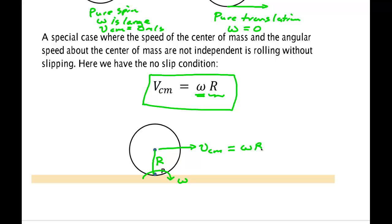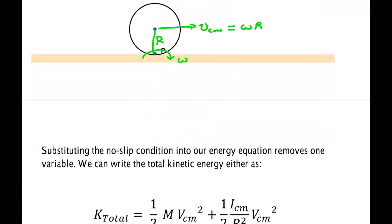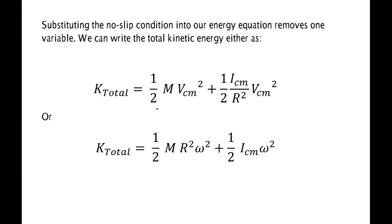Now, what that means is that you can go in and either eliminate the center mass speed and find omega, or you can eliminate omega and find the center mass speed. If you do that in our energy, then you'll get either this equation where I've replaced omega with v over r, and I brought the r squared under the I center mass,